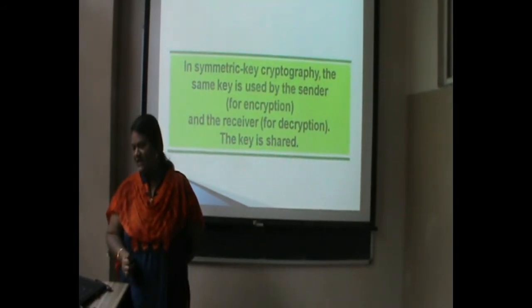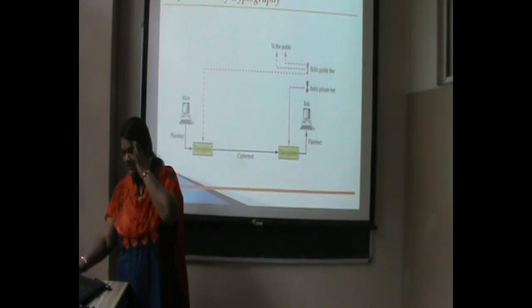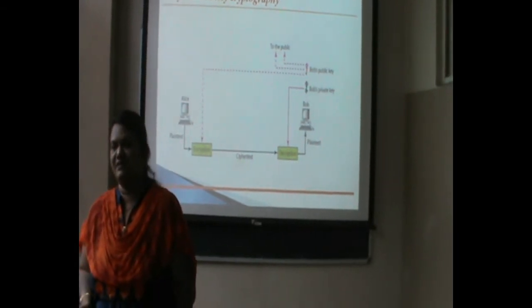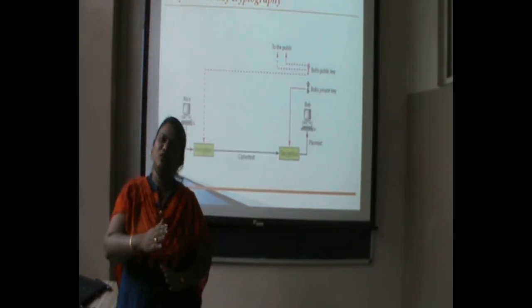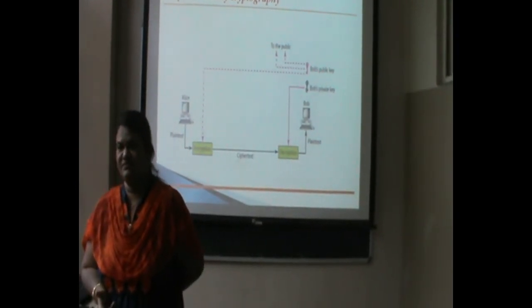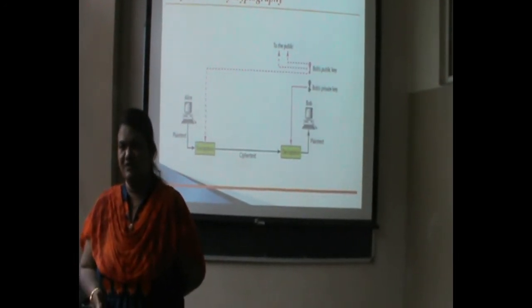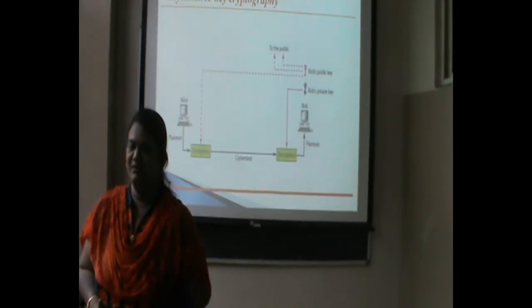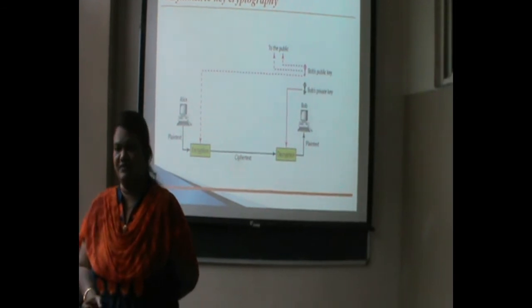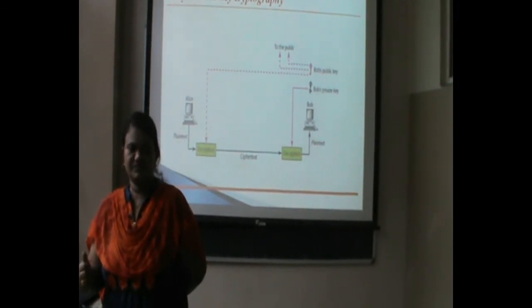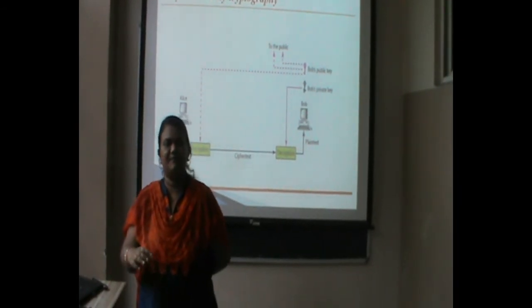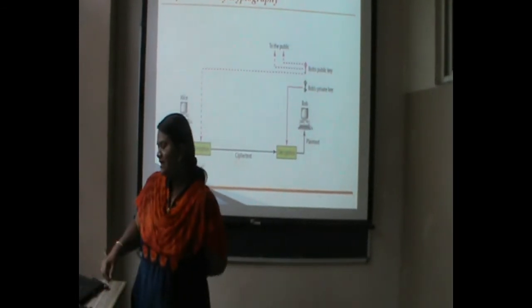In asymmetric key cryptography, two keys are generated — one private and one public key. The private key is only known to that particular person, while the public key is distributed to all authorized persons. For example, a digital certificate is like our license or passport. Whenever a person wants to make an online transaction, they acquire a digital certificate that contains their public key. The private key is known only to us, while the public key is known to all persons involved in the transaction. This is the asymmetric key cryptography.